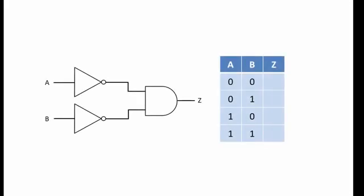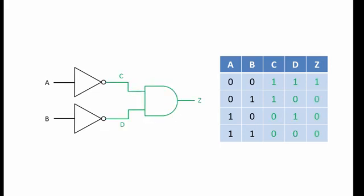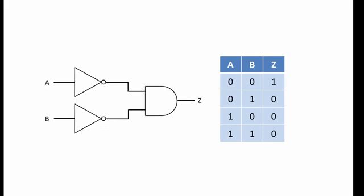Here is another example. Perhaps you would like to give this one a go yourself. Pause the video now if you would like to try it and resume in a few minutes and I will show you the solution. Just like we did before, it is useful to consider points C and D. Each value of C is the result of passing each value of A through a NOT gate. Each value of D is the result of passing each value of B through a NOT gate. And now that we have values of C and D, we can pass combinations of these through an AND gate, giving us each value of Z. Here is our truth table. You might have noticed that this is the same truth table as the NOT OR combination that you saw earlier.